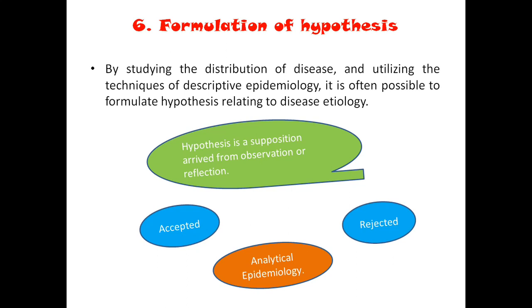In the next study design — that is an analytical study — we are going to test the hypothesis, whether it is true or false, and either accept or reject it. So we have come to the end of the steps. I will just recap: the first step was defining the population, defining the disease with an operational definition, describing the disease based on time, place, and person, measuring the disease using tools of epidemiology (incidence and prevalence), comparing with other groups, and finally formulation of hypothesis.